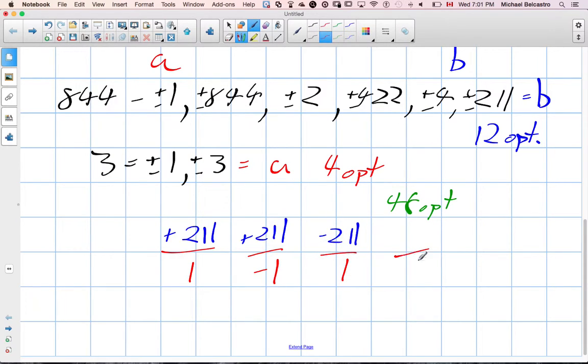Or I could use negative 211 over 1, or positive 211 over negative 1. So that's just to show you, with just those two numbers, we're able to build four different options. So there's tons of options.